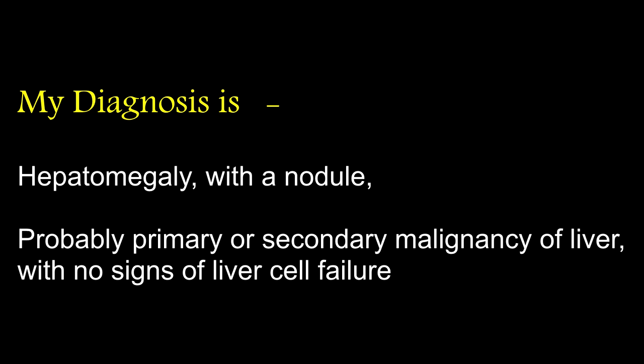Can it be a lymphoma? No, because the spleen and other lymph nodes are not enlarged, and the liver is nodular and hard. In lymphoma, the hepatomegaly is smooth, firm and uniform. Can it be a retroperitoneal mass and not the liver? No — first, it is moving with respiration, and second, fingers cannot be insinuated between the lump and the costal margin. A retroperitoneal mass will never move with respiration, and fingers can be insinuated between the lump and the costal margin.